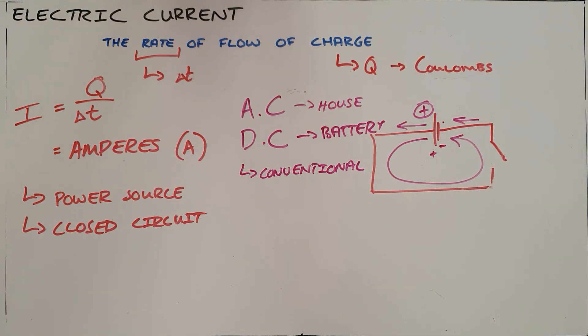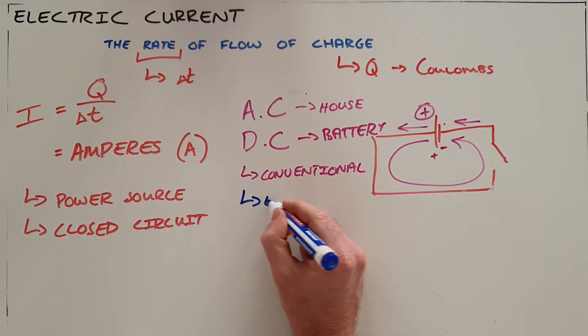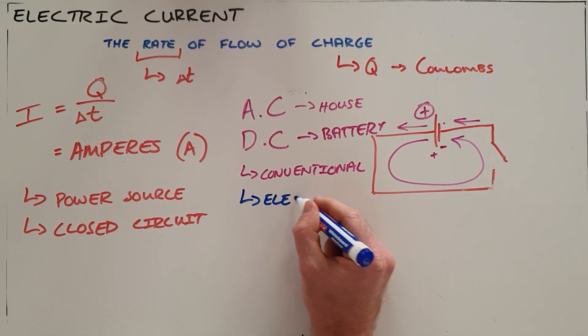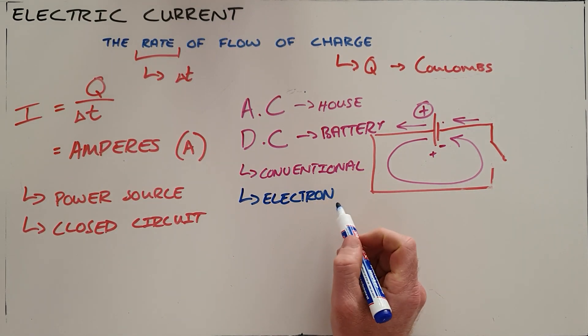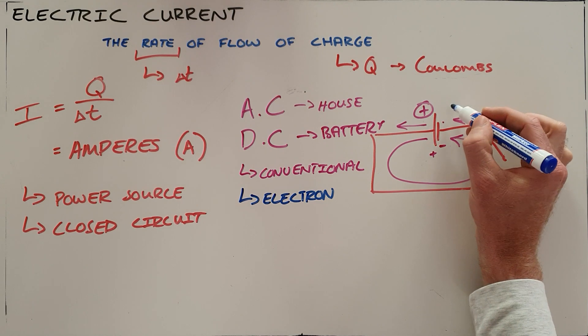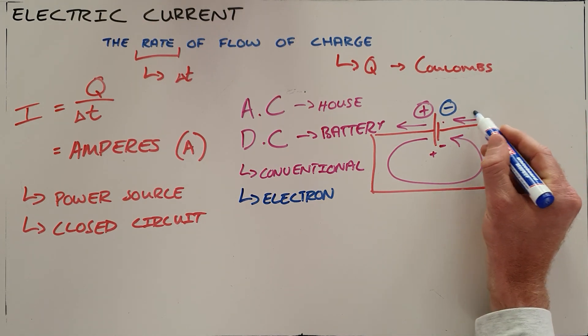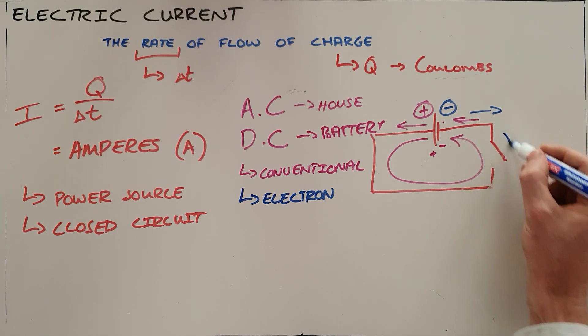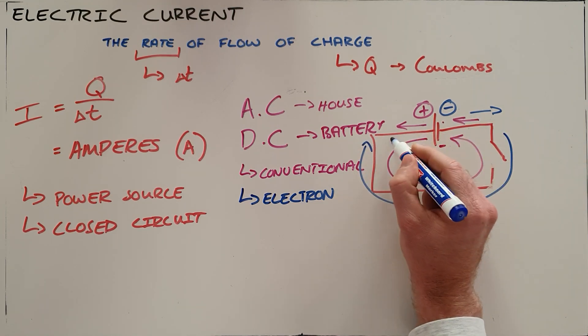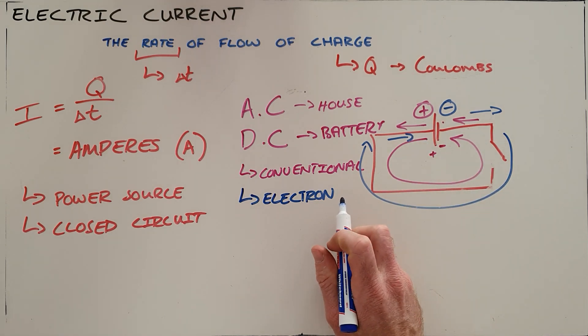In reality though, it is not positive charge that moves in a circuit - it is electrons that move through the circuit. We call that electron current, and it is the flow of electrons or negative charge, which would obviously flow from the negative terminal of the battery around the circuit towards the positive terminal.